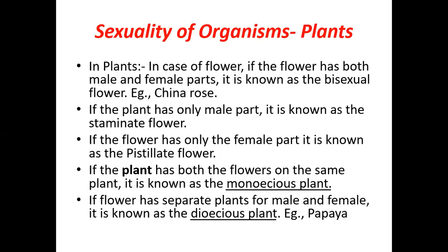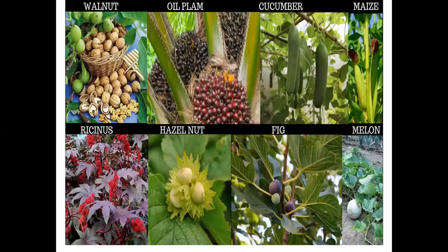In monoecious plants, both types of flowers grow on the same tree. Examples of monoecious plants include Walnut, Oil palm, Cucumber, Maize, Gracinus, Hazelnut, Fig, and Melon. In these plants, flowers are unisexual but both male and female flowers are present on the same plant.